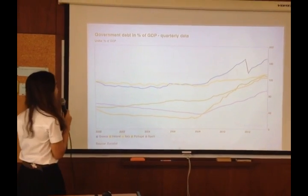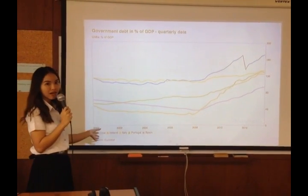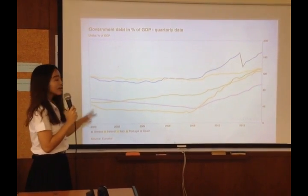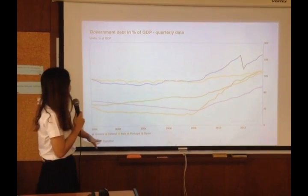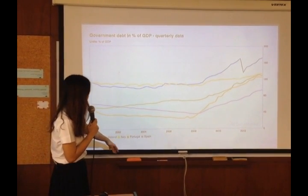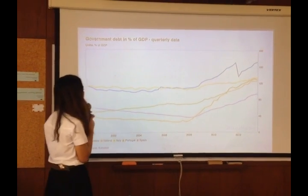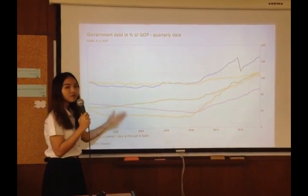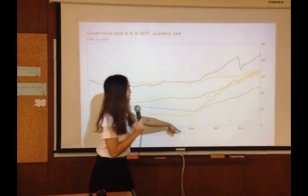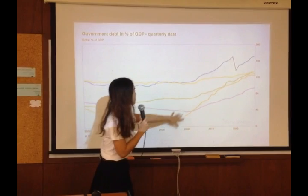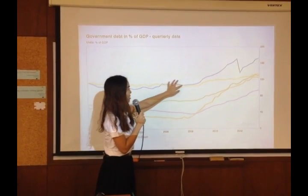Let's start with the first indicator, which is government debt. When we look at the graph, the graph consists of five countries — the PIIGS group. The blue line is Greece, the orange line is Ireland, yellow is Italy, green line is Portugal, and the pink line is Spain. When we look at the graph, we will see that every country has higher debt since 2008, and the country which has the highest point of debt is Greece.